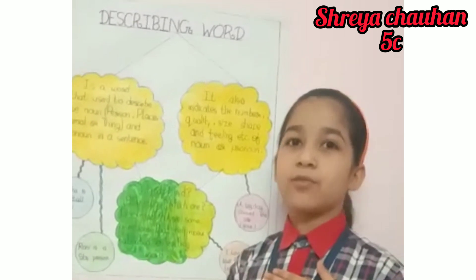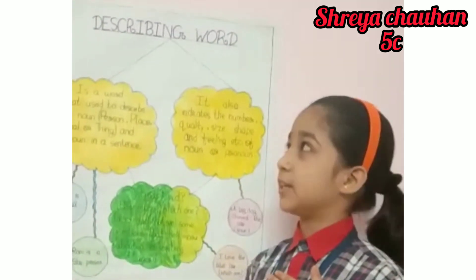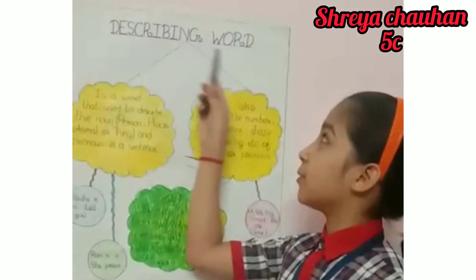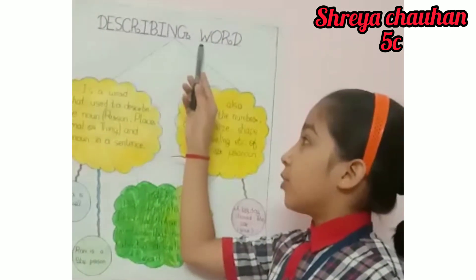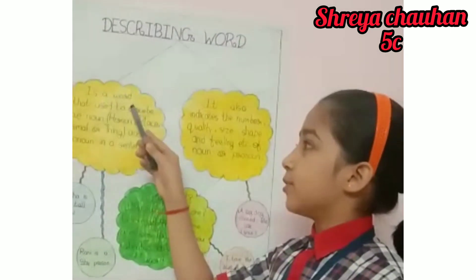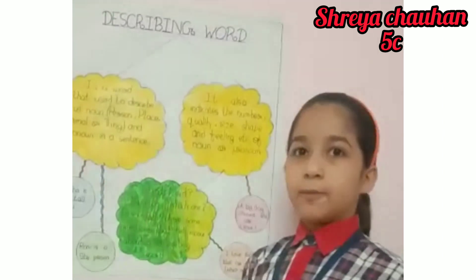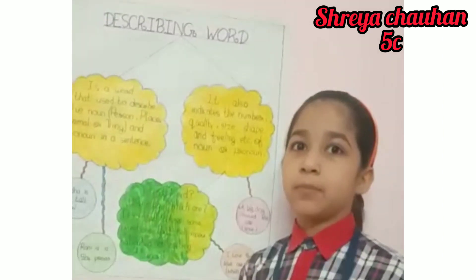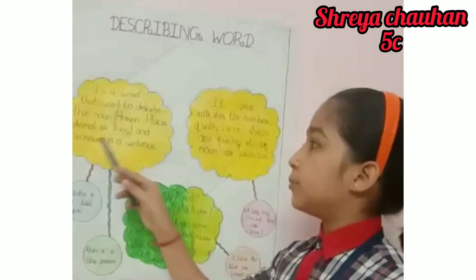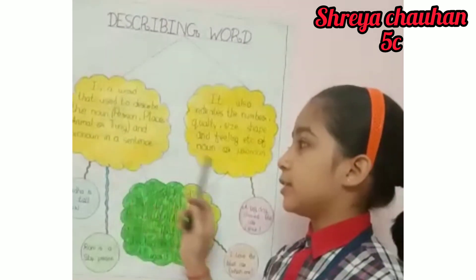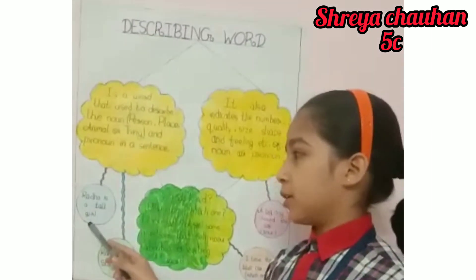I am Shreya from class 5th C and today I am presenting describing word. What is describing word? A describing word is a word that is used to describe the noun, like person, place, thing or animal, and pronoun in a sentence. For example, Radha is a tall girl.